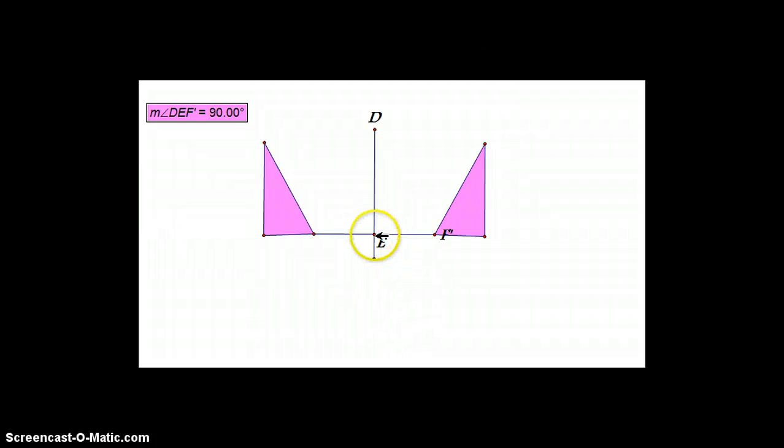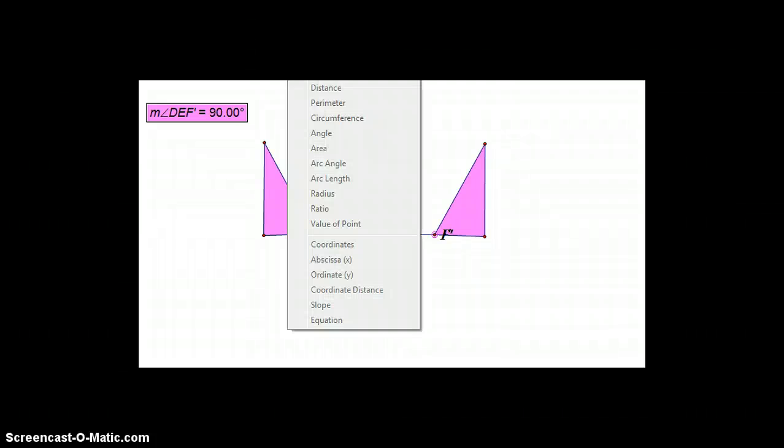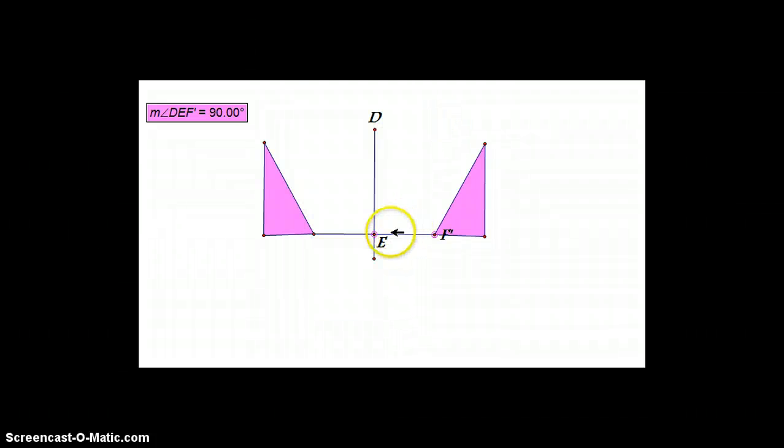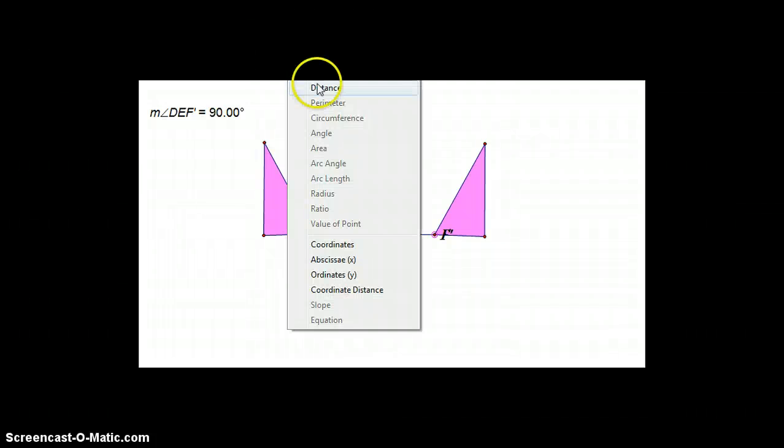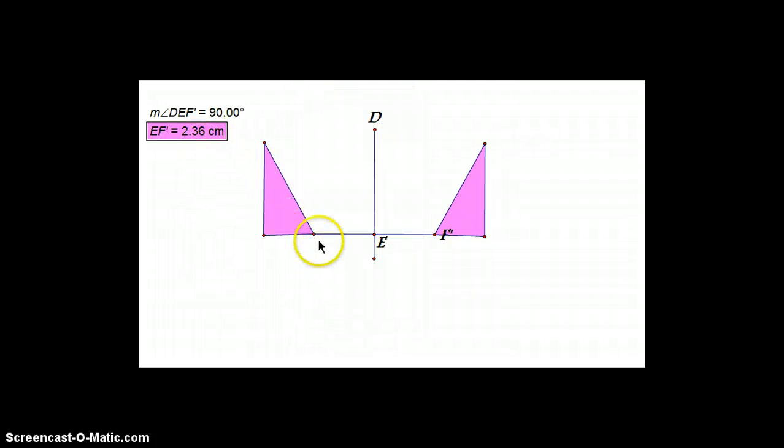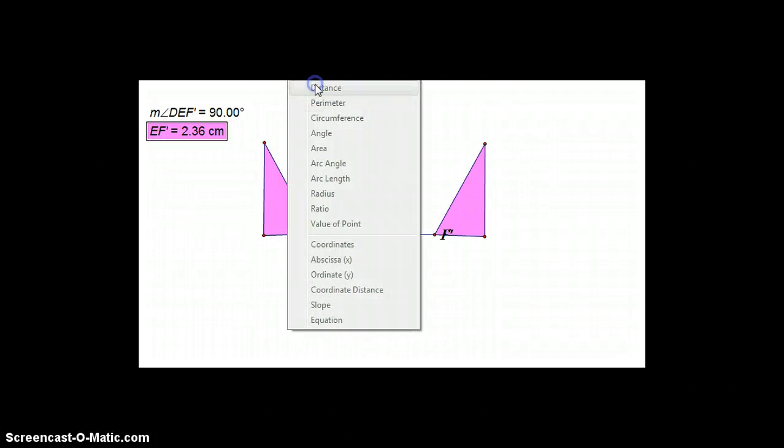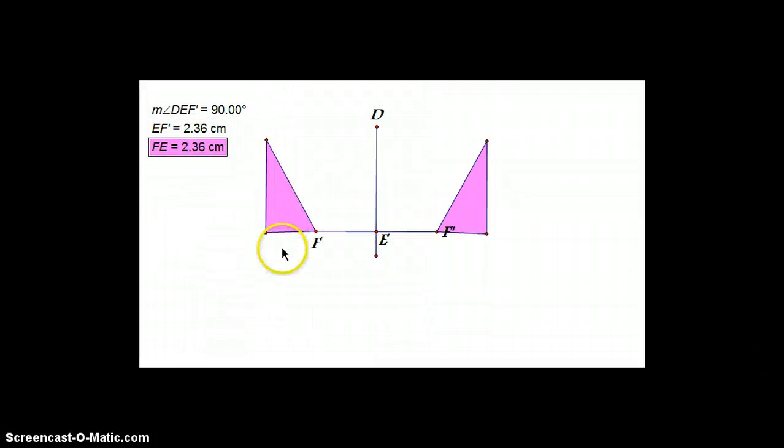If we measure these lengths, the length of EF will turn out to be the exact length of this segment. As you can see, the lengths are the same. Your reflection is a perfect mirror image.